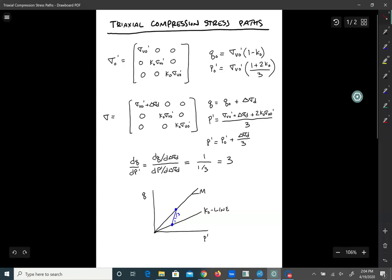So here we have Q0 and P0 prime. Notice that if K0 is 1, if we consolidate isotropically, then 1 minus K0 is 0 and Q0 is 0. So if we consolidate with the same stress in all directions, there's no shear. The Mohr circle doesn't have a diameter yet. But P0 prime is always this equation, sigma V0 prime times 1 plus 2K0 over 3. If K0 is 1, then it's just equal to sigma V0 prime.